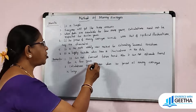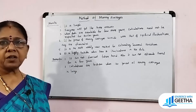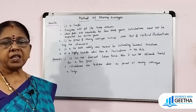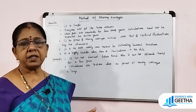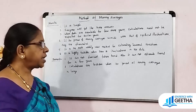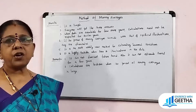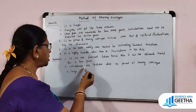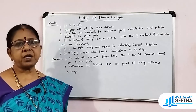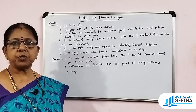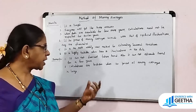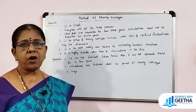Demerits of moving averages: First, it cannot forecast future trends. Second, it cannot estimate trends for a few years — for example, in the 3-yearly method the first and last year have no trend, and in the 5-yearly method the first 2 and last 2 years have no trend. Third, calculations are tedious when the period of moving averages is large, for example 8-yearly, 9-yearly, or 12-yearly — calculations become very tedious.